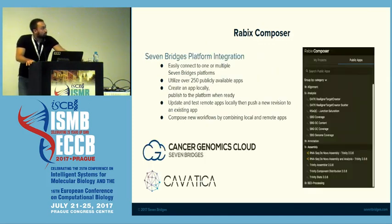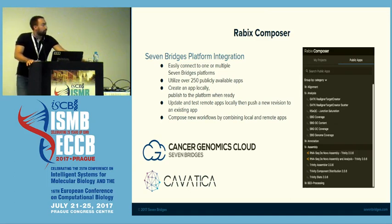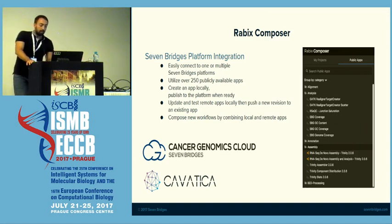One important feature is integration with Seven Bridges platform instances. You don't have to use it, but if you use either the Seven Bridges platform, Cancer Genomics Cloud, or Kavatica — which is a pediatric cloud — you can connect to them, use public apps, and use your own apps. There are over 250 public apps available. You can publish your local apps to the cloud and combine remote apps with local apps, embedding and running them in the cloud.